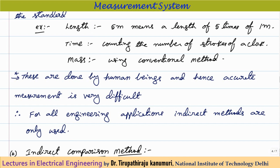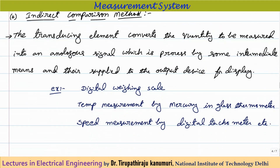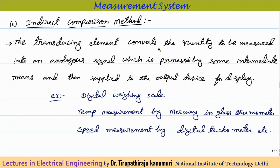For engineering applications we always go for indirect methods. In the indirect comparison method, a transducing element converts the quantity to be measured into an analogous signal, which is processed by intermediate means and then supplied to an output device for display. The measurement is done automatically — human interference is not required. For example, a digital weighing scale automatically converts weight into an electrical signal, then into a digital display.